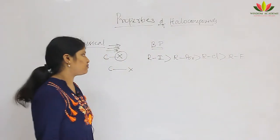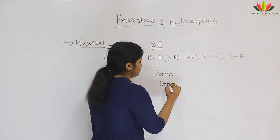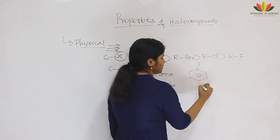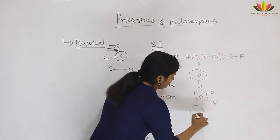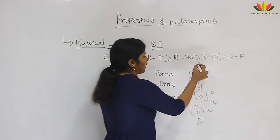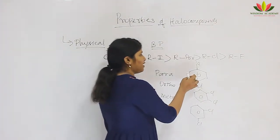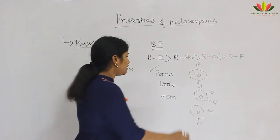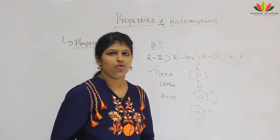The last physical property is melting point. We can consider three isomers: para, ortho, and meta. In para, the two halogens are on exact opposite sides; in ortho, there is nearby substitution; in meta, alternate position substitution. Among these, the para isomer has symmetry — if you cut it into two equal halves, one half is the mirror image of the other. This makes it more stable and gives para a very high melting point compared to ortho and meta.